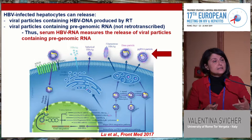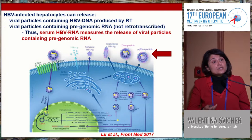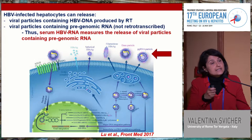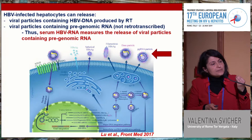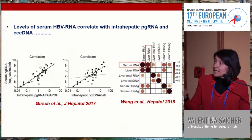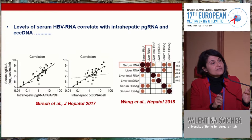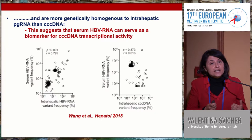Another intriguing biomarker is serum HBV RNA. We know infected hepatocytes can release DNA-containing virions, but HBV also goes beyond — infected hepatocytes can release RNA-containing virions. This RNA mainly represents pre-genomic RNA that failed to be converted into DNA by reverse transcriptase. Different studies have shown that serum HBV RNA correlates with intra-hepatic pre-genomic RNA and is more genetically homogenous to pre-genomic RNA than to cccDNA, supporting that it reflects cccDNA transcriptional activity.